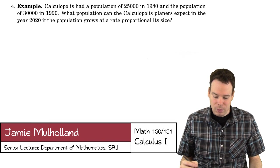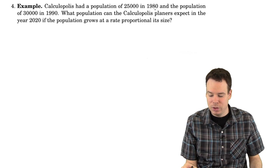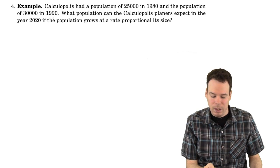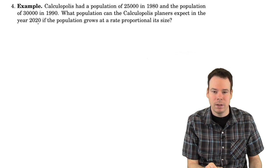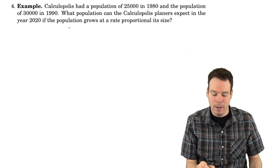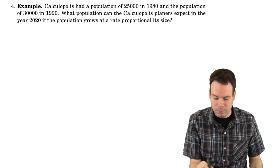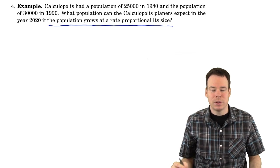In this first example we have a city, Calculopolis, and we know its population in 1980. We also know its population in 1990, and we'd like to use that information to predict what the population should be in 2020. All we're told, in addition to those bits of data about populations in 1980 and 1990, is that the population grows at a rate proportional to its size.